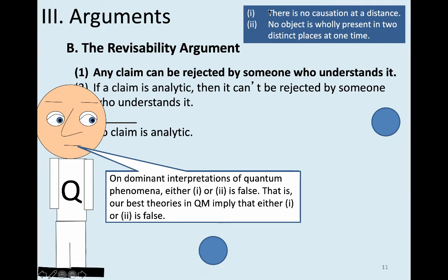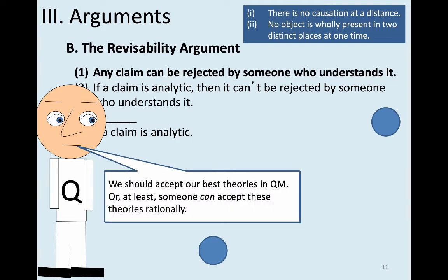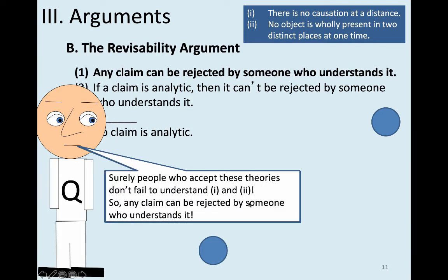If you accept this result from quantum mechanics, you have to simultaneously either reject the claim that there's no causation at a distance, or reject that no object is wholly present in two distinct places at one time. But if anything is analytic, then claims one and two are analytic — so how could you possibly reject one of them? You must be revealing a lack of understanding. But says Quine, people who take quantum mechanics to undermine claims one or two aren't demonstrating failure to understand what they say. They do understand them, and they think it's been shown empirically that at least one is false.